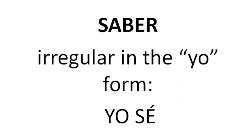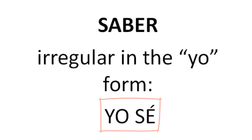We've got to remember that saber is irregular in the yo form. Yo sé is how you say 'I know.' The rest of the conjugations follow the normal ER verb pattern: tú sabes, él sabe, nosotros sabemos, ella sabe, ellos saben.